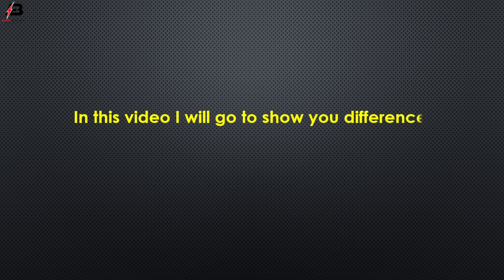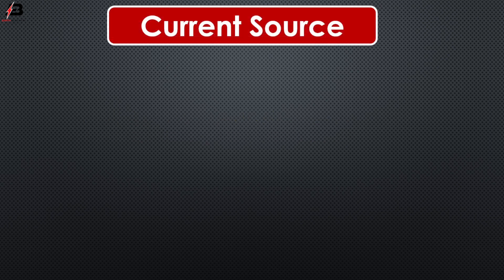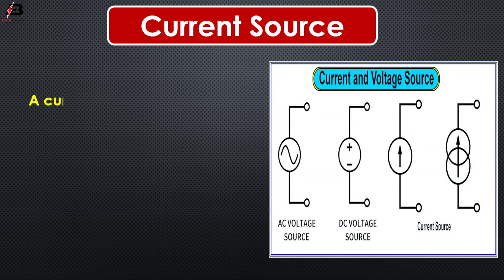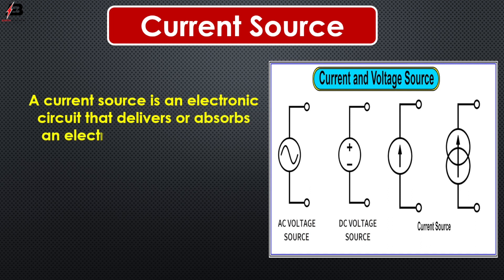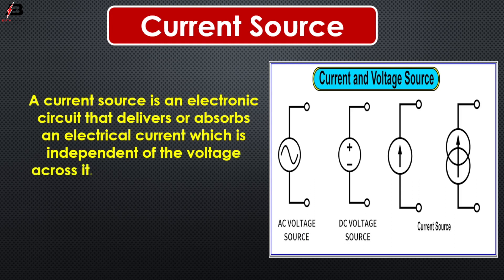In this video, I will show you the difference between current source and voltage source. A current source is an electronic circuit that delivers or absorbs an electrical current which is independent of the voltage across it.